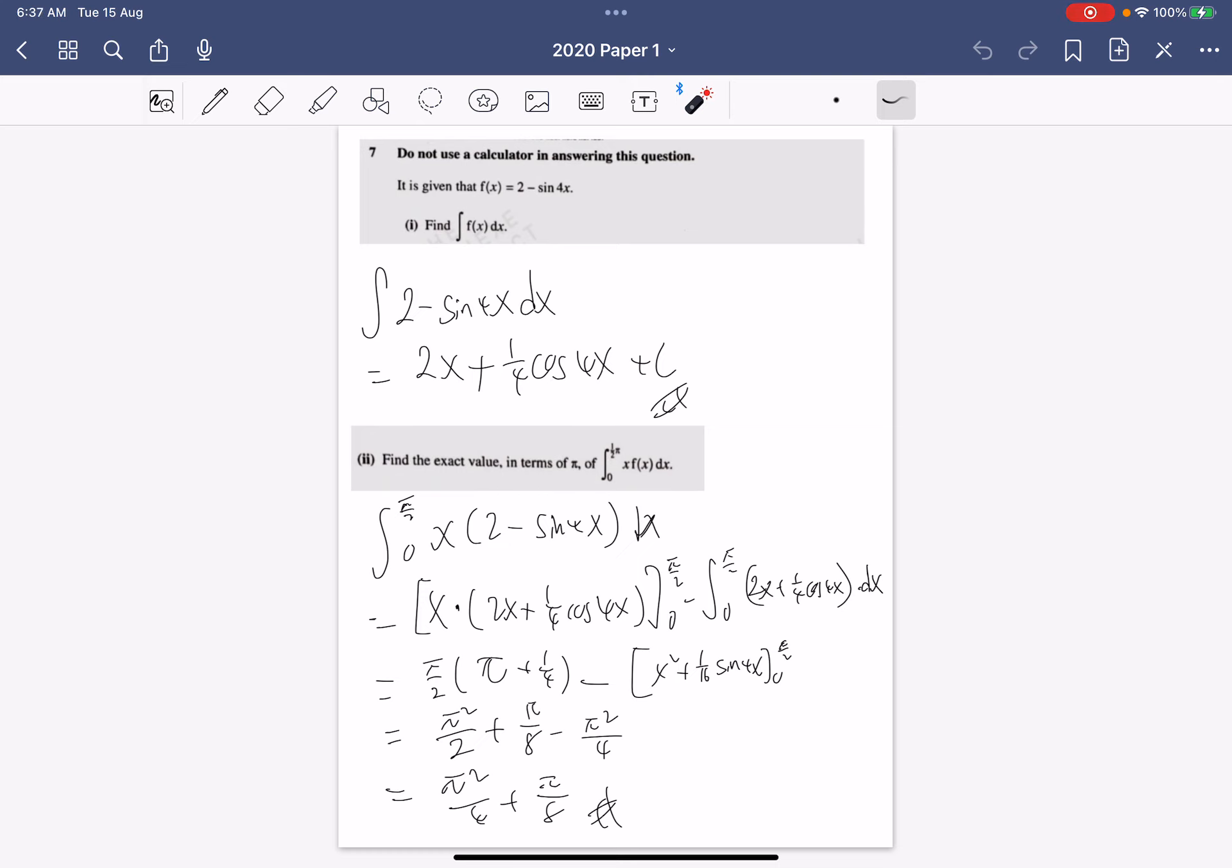We're not allowed to use a calculator and we wouldn't need to. It is given that f(x) is 2 minus sine 4x and we're just supposed to integrate f(x). So we just integrate 2 minus sine 4x. Because it's minus, you can just integrate one part and another. So integrate 2 which is 2x, integrate sine 4x which is minus one quarter cosine 4x, with this minus sign becomes a plus, then you just plus c.